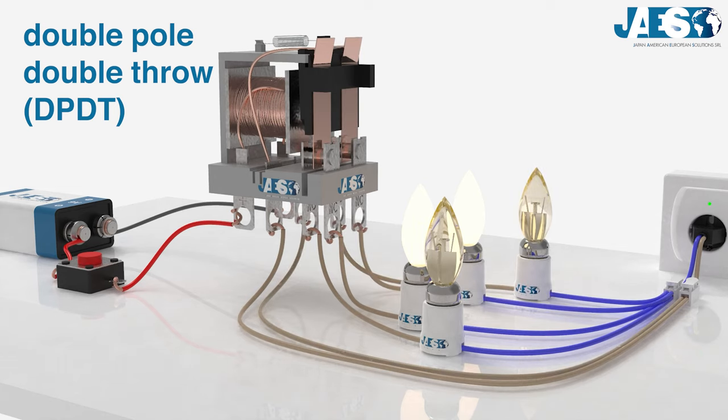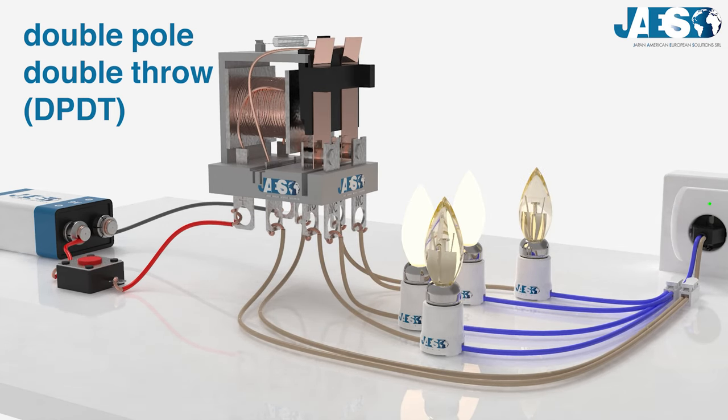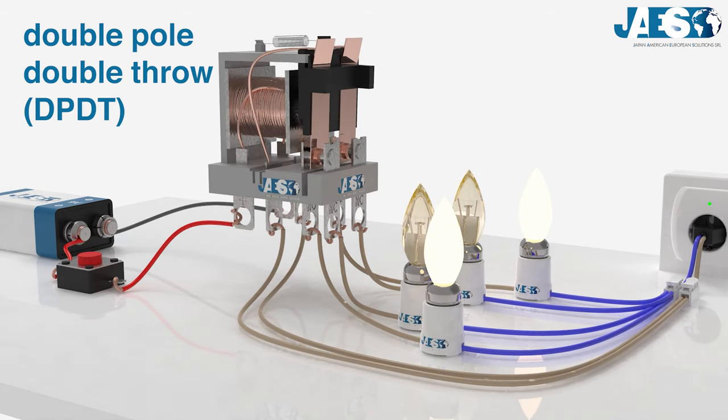Finally, the Double-Pole Double-Throw is equivalent to two Single-Pole Single-Throw controlled by a single electromagnet.